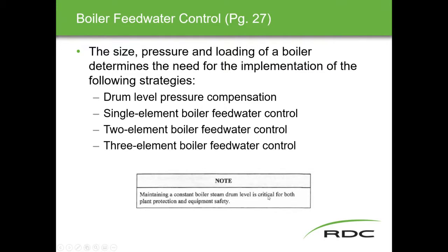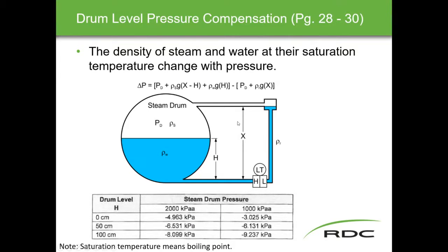Maintaining a constant boiler steam drum level is critical for both plant protection and equipment safety. The steam drum is probably the second most significant component in a boiler. Why do we need pressure compensation? The density of steam and water at their saturation temperature changes with pressure. This ties into concepts like wet steam, dry steam, and superheated steam — changing pressure changes density, which changes physical characteristics like heat capacity.